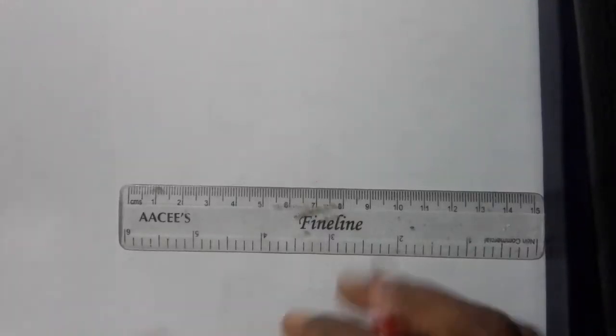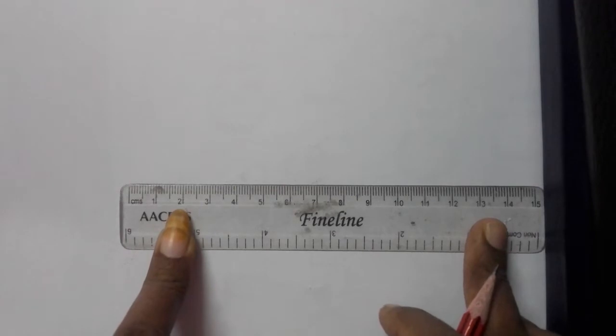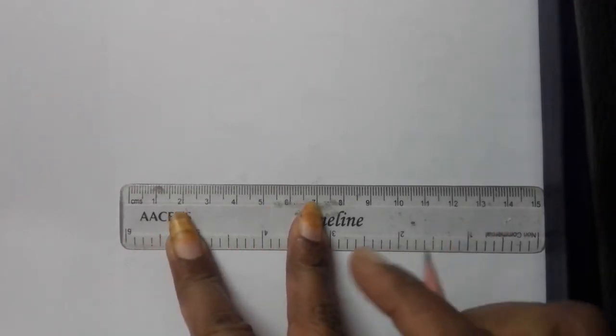In the question, it is given as AB is equal to 5.5 centimeters. So, now use your scale.